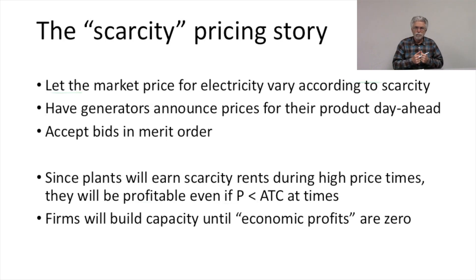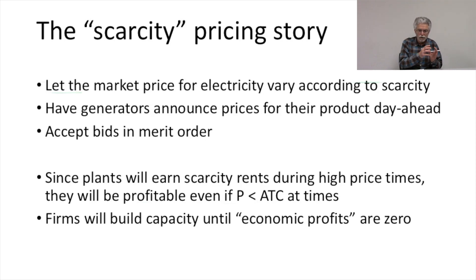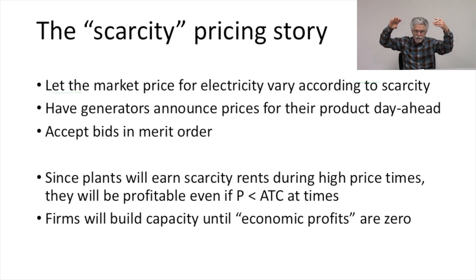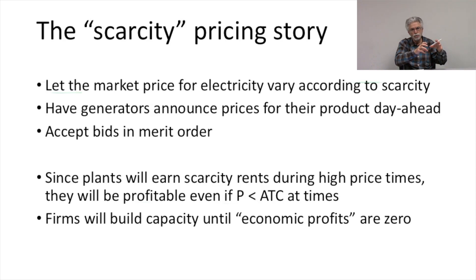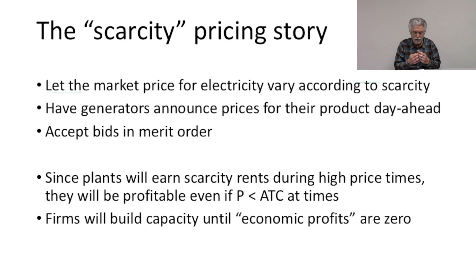If we allow this process to play out, the scarcity pricing story tells us that firms ought to build capacity up to the point where it has zero economic profits. Allow the price to float high enough to bring resources online to cover the current demand. If resources are brought online according to marginal cost, then for any given level of demand, our electricity price is going to be set by the marginal cost of the most expensive resource brought online. Meanwhile, all the other resources are going to be earning scarcity rents, which makes sure that they earn zero economic profits.